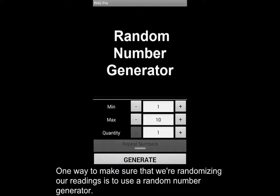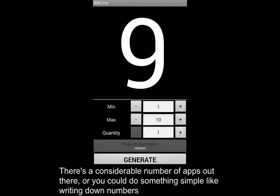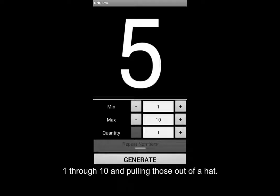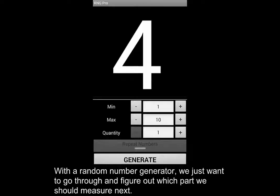One way to make sure that we're randomizing our readings is to use a random number generator. And there's a considerable number of apps out there, or you can do something simple, like writing down numbers 1 through 10 and pulling those out of a hat.